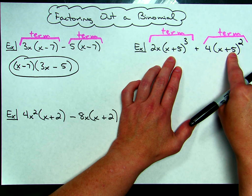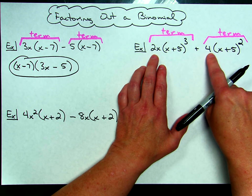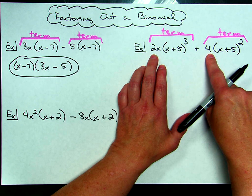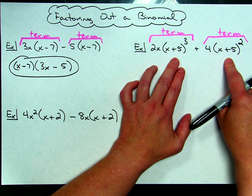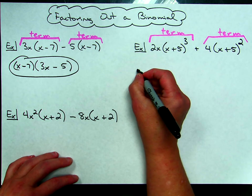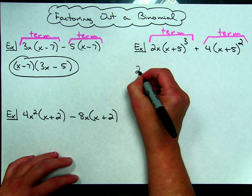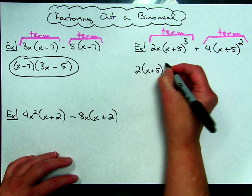Also, looking at my coefficients there, I'm going to be able to take a greatest common factor out there, I could take two out of both of those, so you can take out the single numbers in front, and you can take out binomial expressions more than one. So my greatest common factor is going to be a 2, and then x plus 5 raised to the second power.